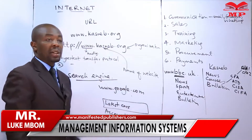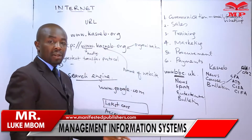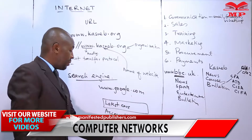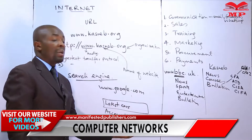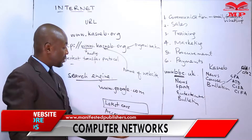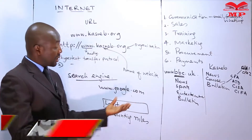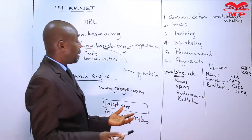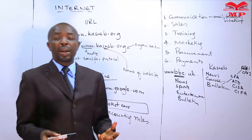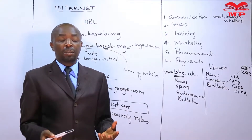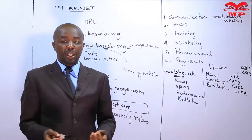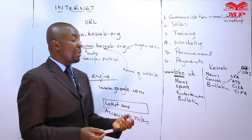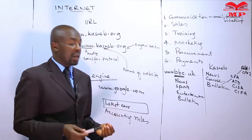If you just type 'latest cars' and press enter, it gives you so many links — there could be over 100 links for organizations marketing latest cars. Similarly for accounting rules, there could be so many links. For example, somebody types 'MIS lectures' and there are so many MIS lectures in the world. If somebody types 'MIS lectures for CASNEP,' you'll find two or three individuals who have given those lectures.